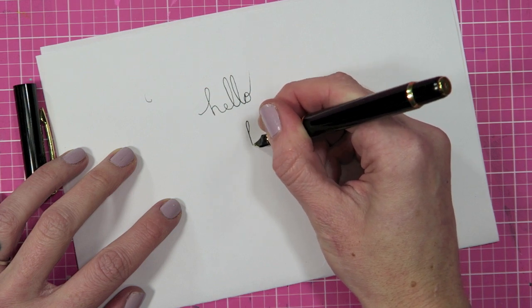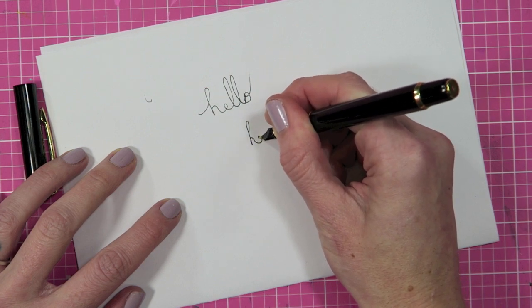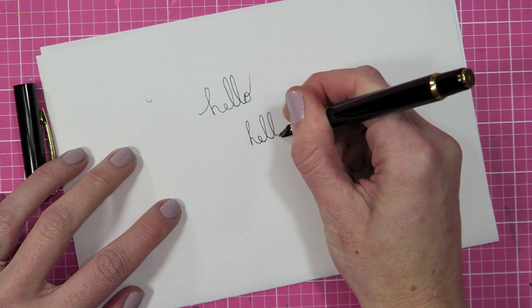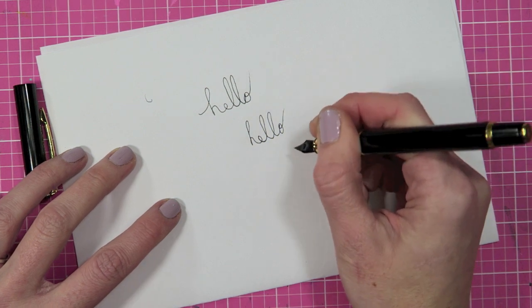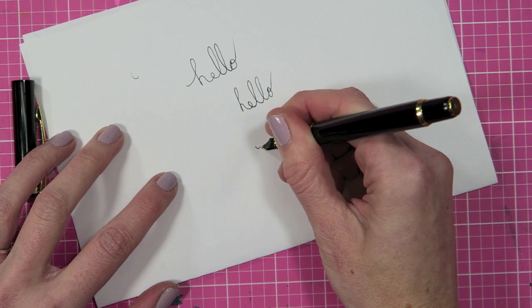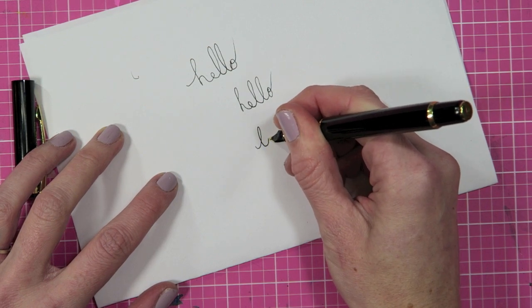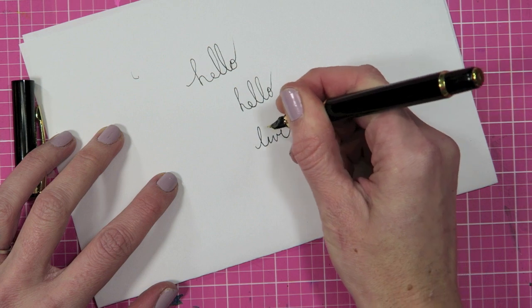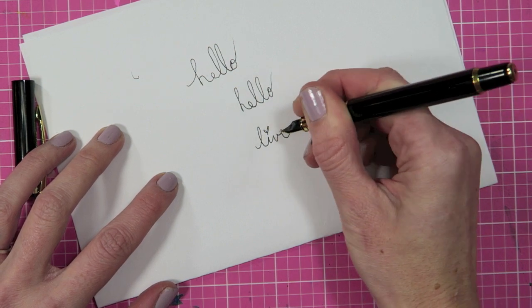So I'm just practicing writing a little bit here and you guys the pin writes really smooth and I really like it especially for writing in my bullet journal. I just tested it out in my bullet journal and it doesn't bleed through to the other side and it's just a really nice thin line.